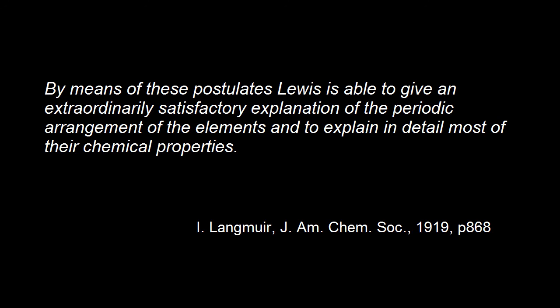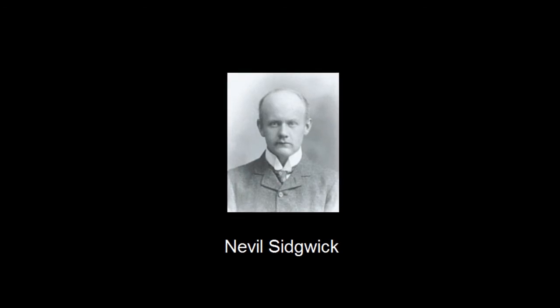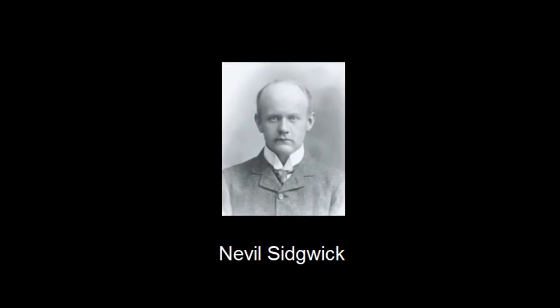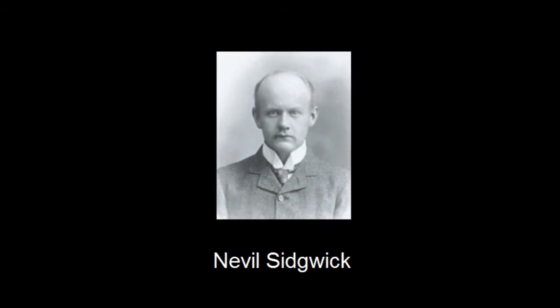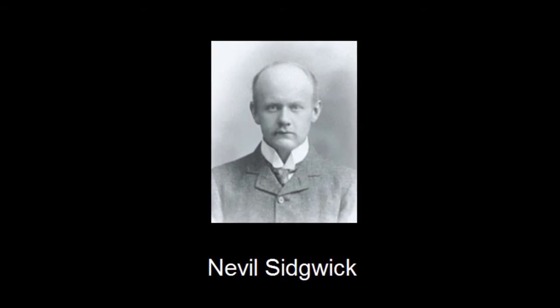In July 1923, Lewis travelled to Cambridge to give the introductory address at a meeting of the Faraday Society on the electronic theory of valence. It was here that he claimed that the cardinal phenomenon of all chemistry is the formation of an electron pair. Although seven years had passed since Lewis' first publication on the topic, it is notable that there were a number of participants who still held on to the concept of orbiting electrons, one of whom was Neville Sidgwick.